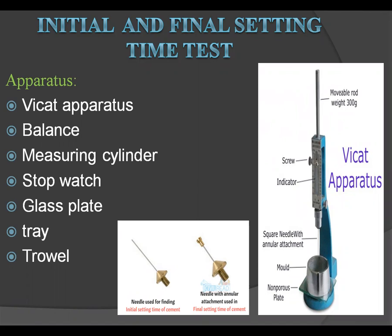First, what is the initial setting time? The initial setting time of cement is the time when the cement paste starts hardening after adding water. It is the time period between the addition of water to cement until the time at which a 1 mm square section needle fails to penetrate the cement paste placed in the Vicat mould, 5 mm to 7 mm from the bottom of the mould.